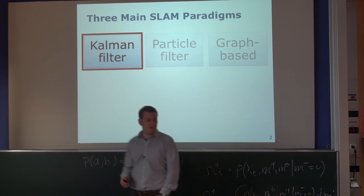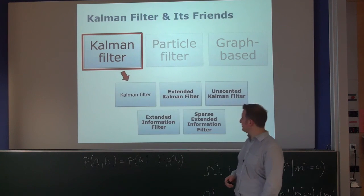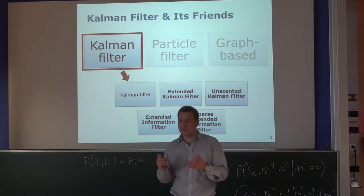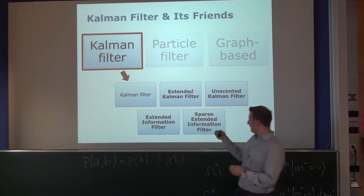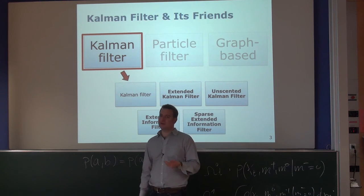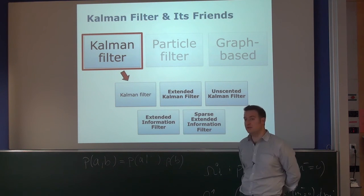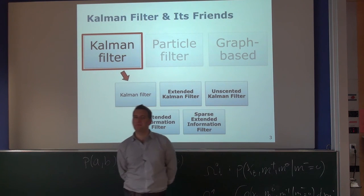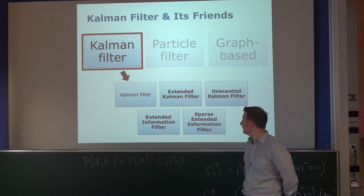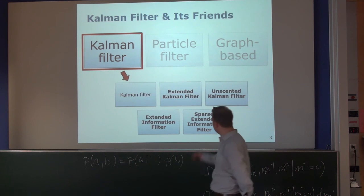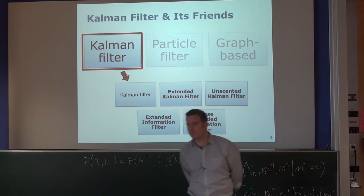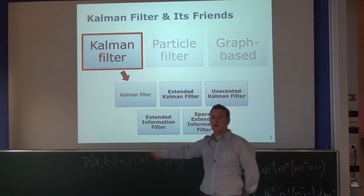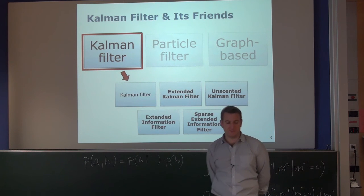We started with Kalman filters. The Kalman filter is not just the filter itself — it's the Kalman filter and all its friends. We looked into the Kalman filter, but didn't really use it for SLAM because it assumes everything is linear. That led us to the extended Kalman filter, which uses linearized models. Then we looked into the unscented Kalman filter, which used the unscented transform for a better approximation. And then we looked into the extended information filter briefly, and the sparse extended information filter in much greater depth. These are the most important representatives of the Kalman filter family used for SLAM.